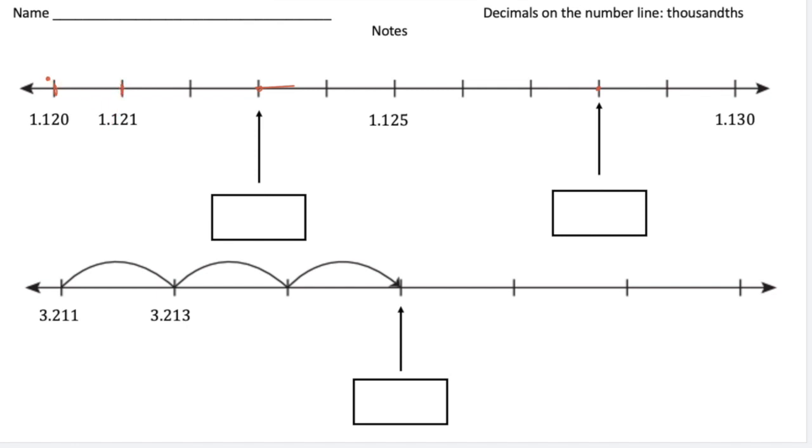So notice as we go from left to right we're increasing by 0.001. So it's increasing by 1 in 1 thousandths every time we move up a line.